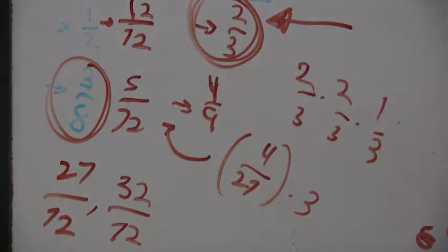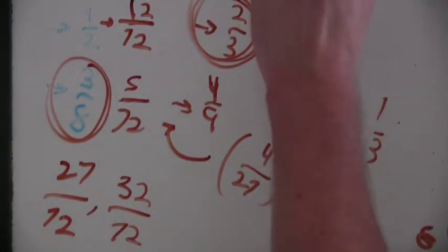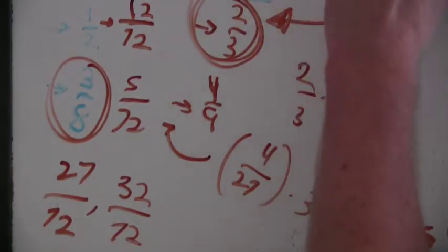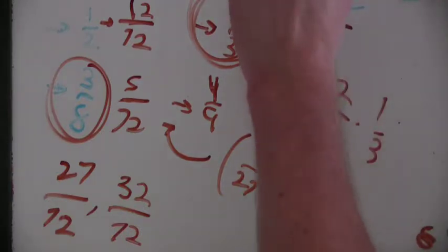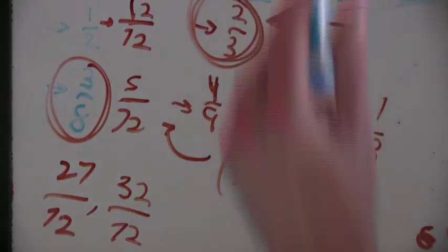But what actually happened in this problem is you flipped a coin and then you flipped a second coin. And you got this sequence of head and then 2 heads out of 3 flips.